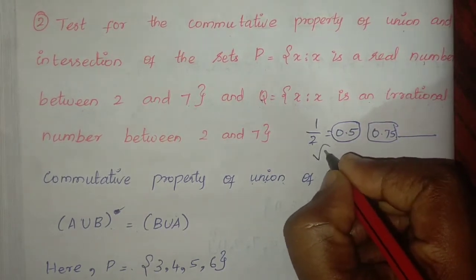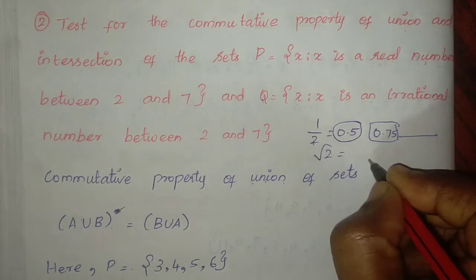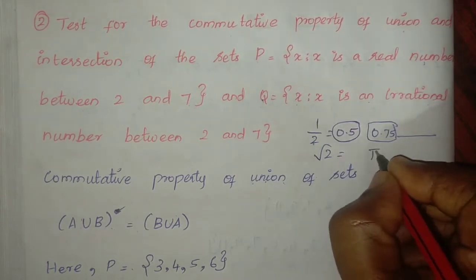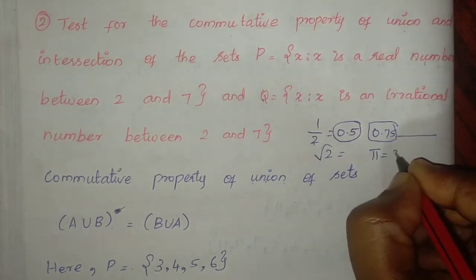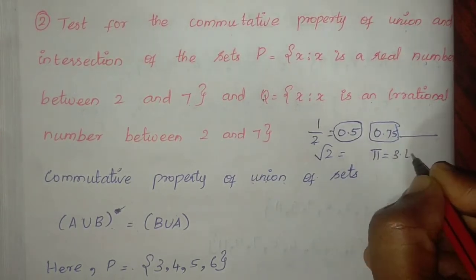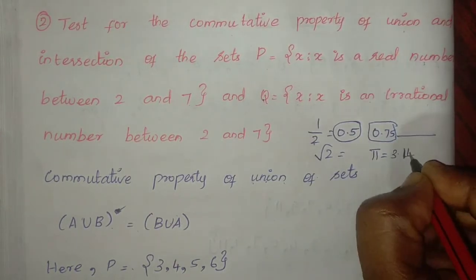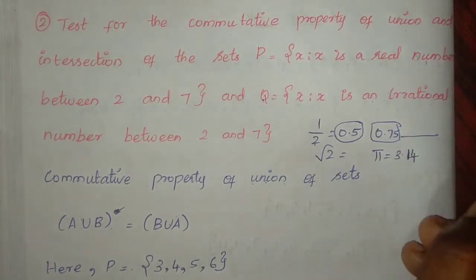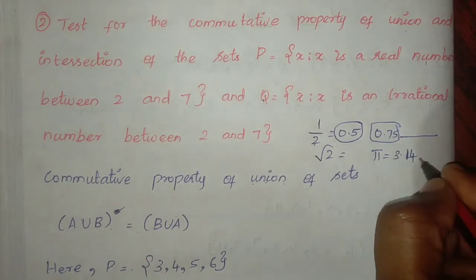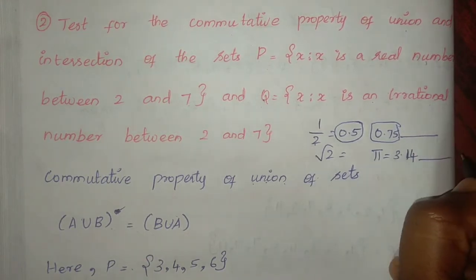Root 2 value, pi value 3.14 — these are numbers whose decimal expansion continues without repeating. So the irrational numbers between 2 and 7 include root 3, root 5, root 6.